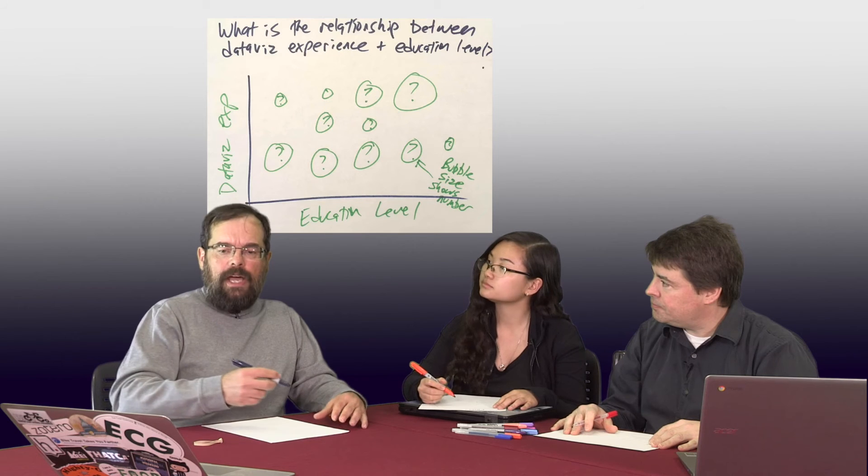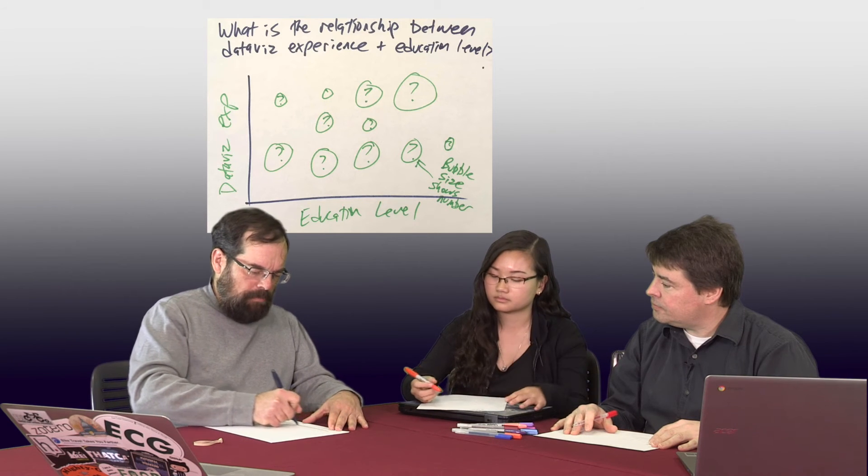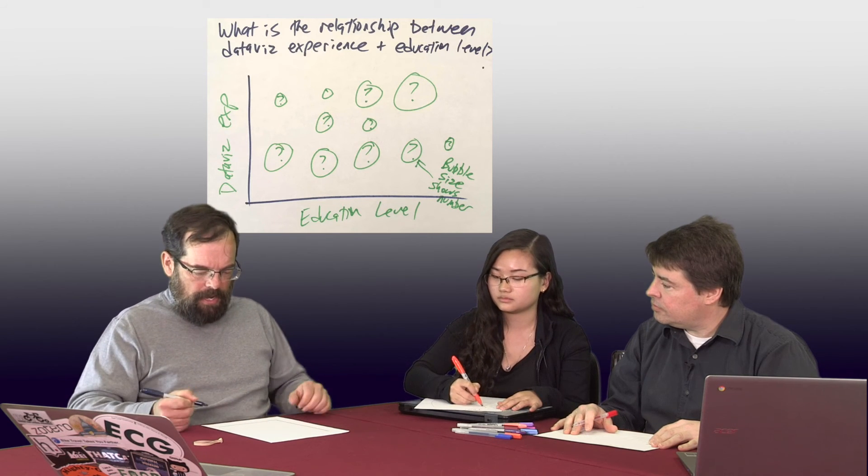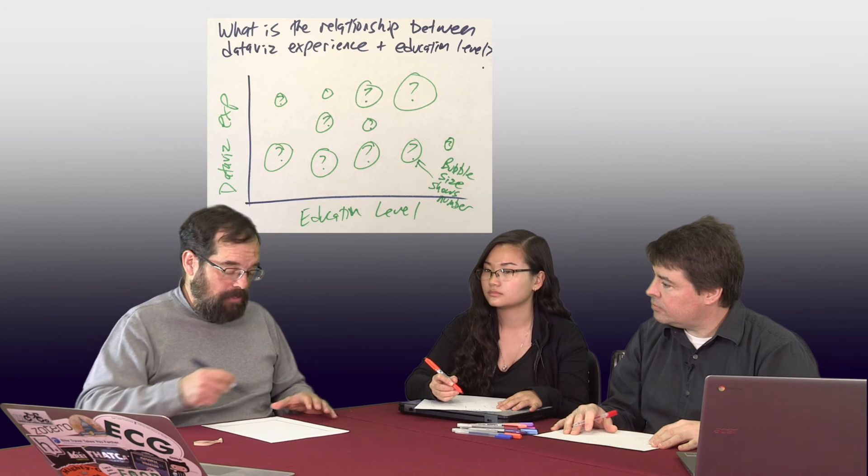For my data story, I want to know where everyone is from. I will show it with a map. For my data story, I want to know what percentages of the class represent different occupations, and I'm picturing this as a bar chart. And I'm curious about the relationship between people's level of education and their experience with data visualization, and whether I can show this as a bubble chart. Let's create an exercise for everyone to draw, write out, and share their ideal story for any type of data, not just for the class data. Take a picture and post it online.